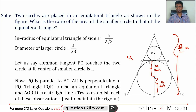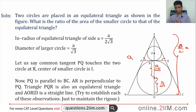Triangle APQ is also an equilateral triangle, since PQ is parallel to BC. This angle is 60°, this angle is 60°, and this was already 60°. So if we know the side of that smaller equilateral triangle, we can find its inradius, and then we're done. We know AD is (√3/2)a, so we can find AR, and from that we can find the side of the smaller triangle.